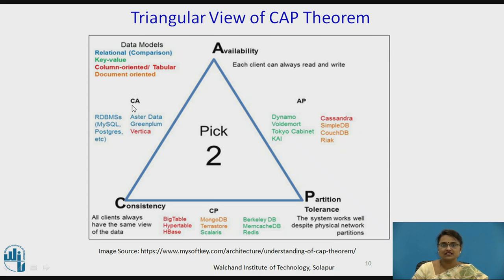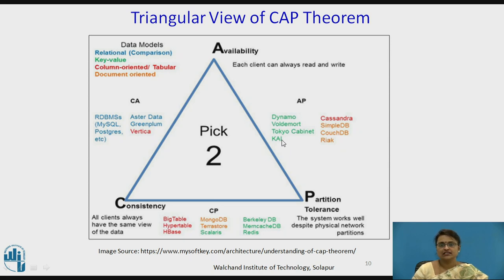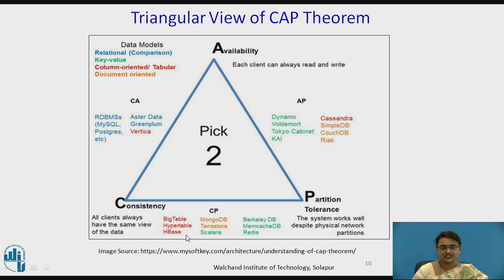Which databases support each combination? Consistency and Availability is supported by the normal RDBMS — MySQL, PostgreSQL — and big data systems like Aster Data and Greenplum. Availability and Partition Tolerance is provided by Dynamo, Cassandra, SimpleDB, CouchDB, Riak, and more. For Consistency and Partition Tolerance, the supporting databases are Bigtable, Hypertable, HBase, and MongoDB, all supporting consistency and partition tolerance.